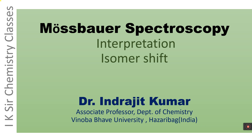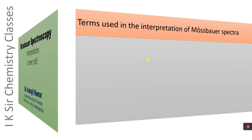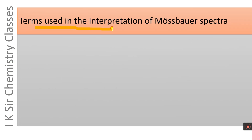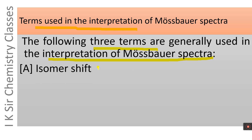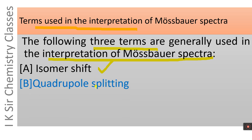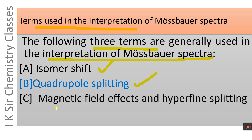Hello, my dear students. Welcome back to the class of Mössbauer spectroscopy. In this video, we will discuss the interpretation of Mössbauer spectra. The following three terms are generally used in interpretation: first, isomer shift; second, quadrupole splitting; and third, magnetic field effects and hyperfine splitting.